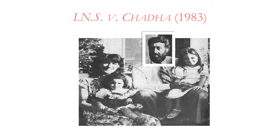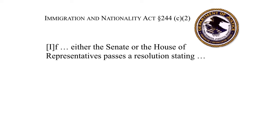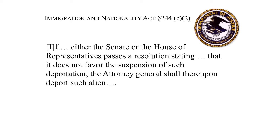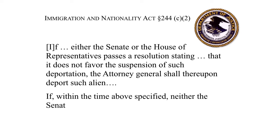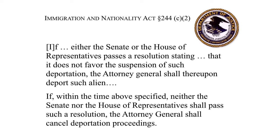The Attorney General made the findings, suspended the deportation proceedings, and, as required under the statute, reported to Congress. The statute — the Immigration and Nationality Act, section 244 — provided that if either the Senate or the House of Representatives passes a resolution stating that it does not favor the suspension of such deportation, the Attorney General shall thereupon deport such alien. If neither the Senate nor the House passes such a resolution within the time specified, the Attorney General shall cancel deportation proceedings. A California Congressman introduced a resolution of disapproval at almost the last possible moment, objecting that Chadda's case and five others out of 340 did not meet the statutory standard of extreme hardship. The resolution of disapproval passed, and Chadda was ordered to depart the United States.